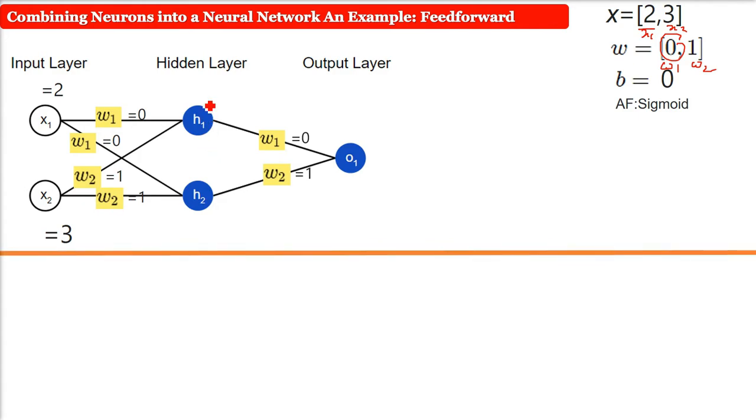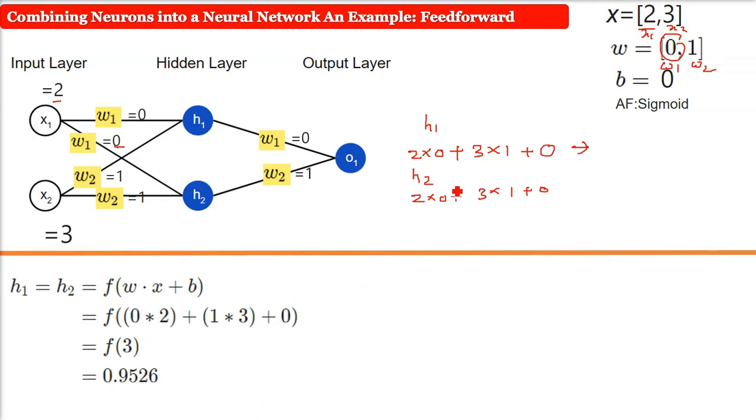The first thing is, how do we compute for H1? For H1, the computation will be same as the previous one. That is, 2 times 0 plus 3 times 1 plus a bias which is 0. Similarly, for H2 also, same thing will be done. H2 will also get 2 times 0 plus 3 times 1, again we have assumed no bias. So H1 will get a value of 3. Same thing, 2 into 0 is 0, 3 into 1 is 3, and 0. This adding gives you 3. For H2, the same thing, we get a 3.